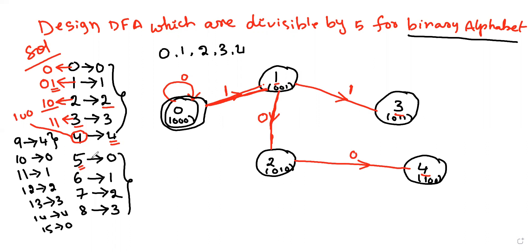Next, for 5: the remainder value is 0, and the binary value for 5 is 101, because 4 plus 1 equals 5, giving us 1, 0, 1. We already have 1 here, 0 here, and then 1. Since the remainder is 0, we choose this path back to the accepted state.